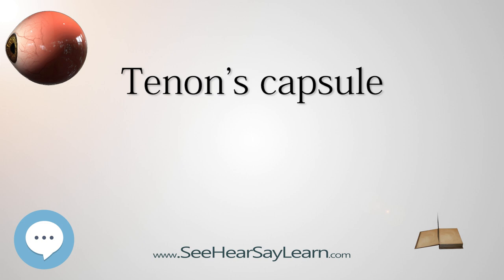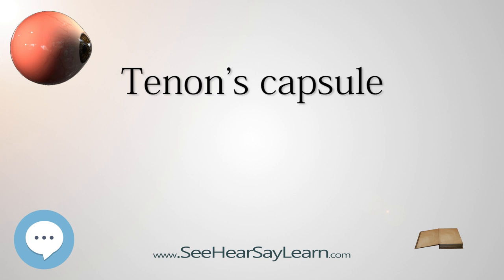Charles Barrett Lockwood described a thickening of the lower part of the fascia bulbi, which he named the suspensory ligament of the eye. It is slung like a hammock below the eyeball, being expanded in the center, and narrow at its extremities which are attached to the zygomatic and lacrimal bones respectively.